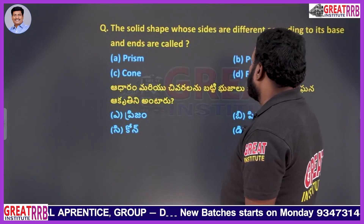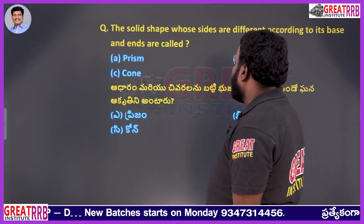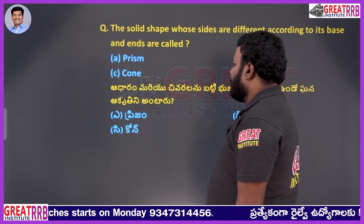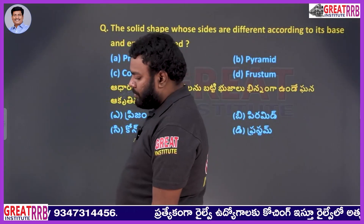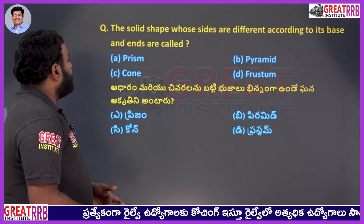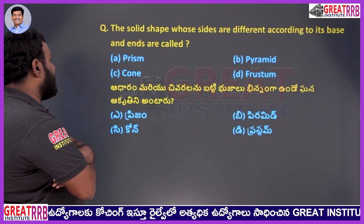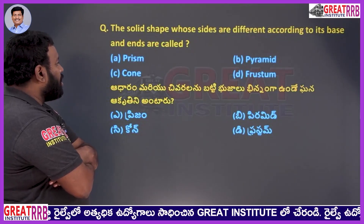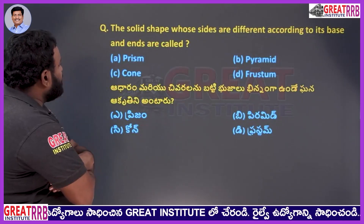The solid shape whose sides are different according to its base and ends is called: A prism, B pyramid, C cone, D frustum. The solid shapes include prism, pyramid, cone, and frustum. The question asks about a shape where the sides are different according to its base and ends.